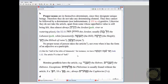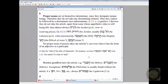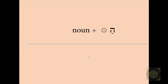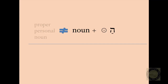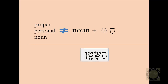Let me illustrate this with a PowerPoint slide. Ha — the he plus the patah with the dot — plus a noun: when you get that combination, it is not going to be a proper personal noun. That means that if we see ha — there's our dot — ha-satan, then ha-satan is not a proper personal noun.